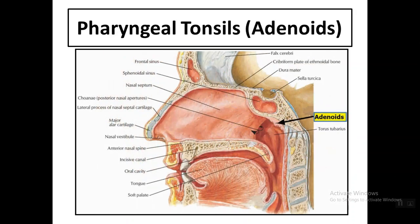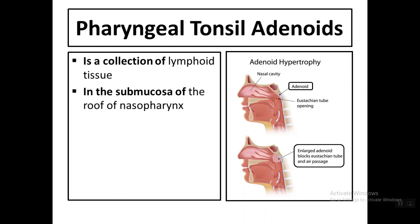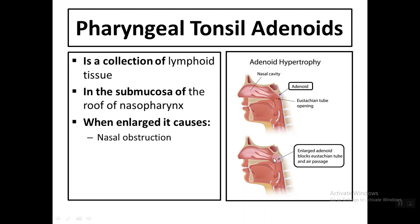The adenoid, or pharyngeal tonsil, is situated below the base of the skull in the nasopharynx. It is a collection of lymphoid tissue with an immune function, located in the submucosa of the roof of the nasopharynx. When it becomes enlarged, it causes nasal obstruction and auditory tube obstruction, which in turn affects the middle ear.